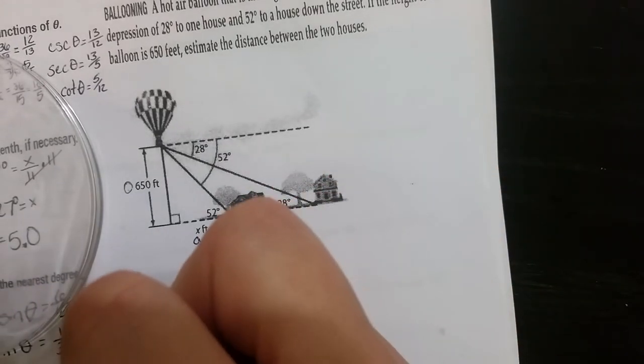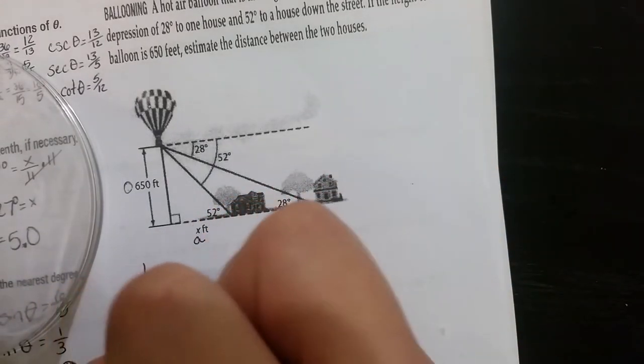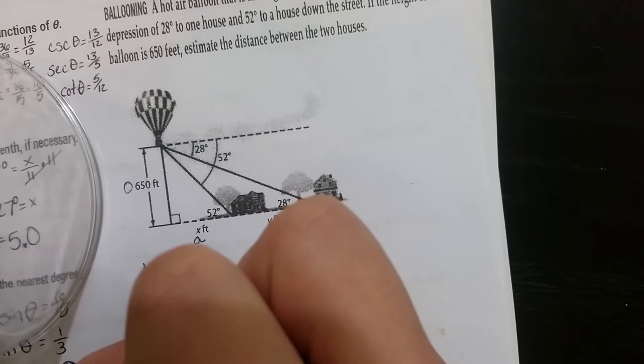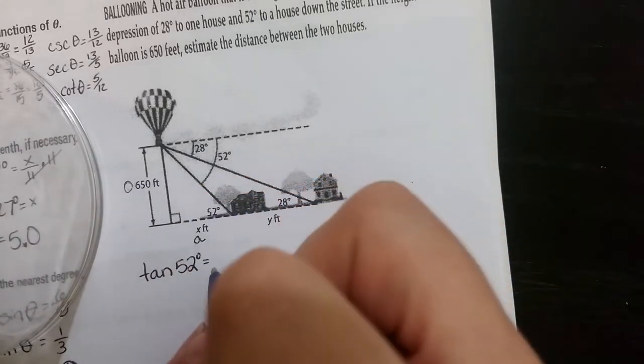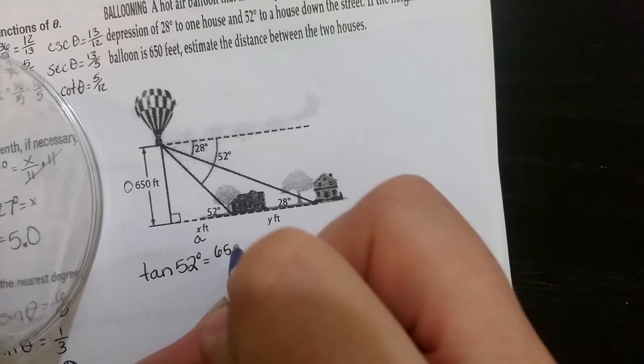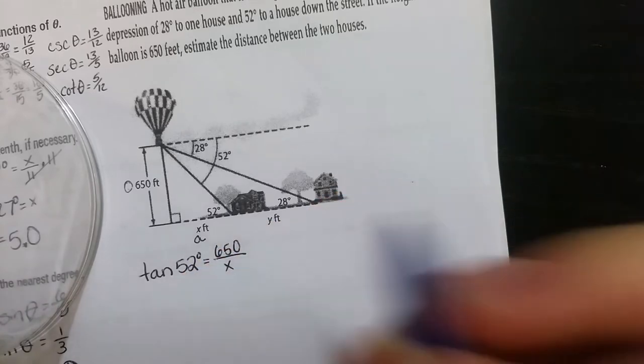So I'm going to set up an equation that says tan of 52 equals opposite over adjacent, which will be 650 over X.